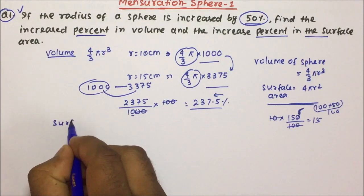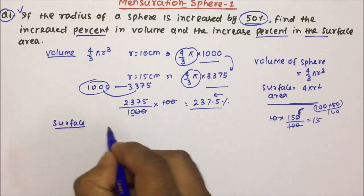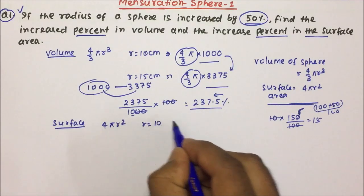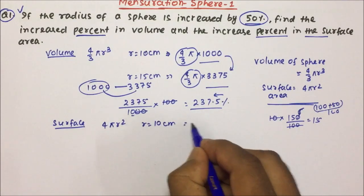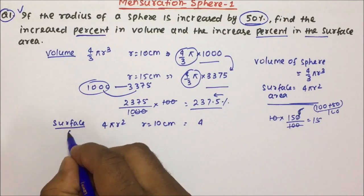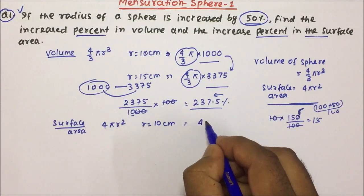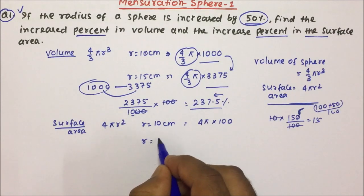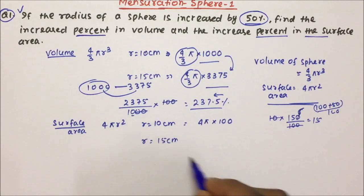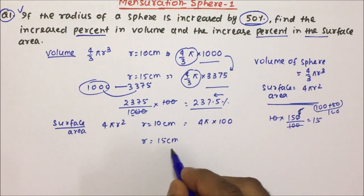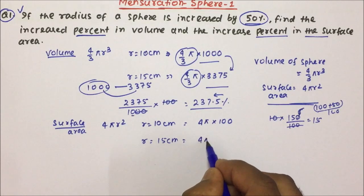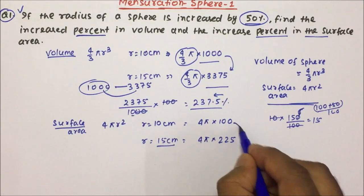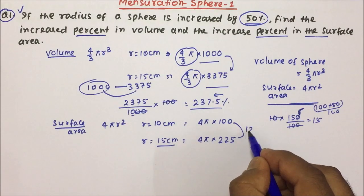Now friends, what is the surface area? Surface area is 4 π r². I am again assuming radius = 10 centimeters, so the surface area will become 4 π into 100. Now the radius has been increased by 50 percent, so it becomes 15 centimeters. So 4 π into r² gives us 4 π into 15² = 4 π into 225.